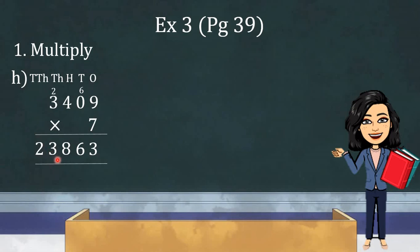So, the answer of your multiplication is 23,863. And, do you know what do we call the answer of multiplication? It is called product. So, we will say that the product of 3,409 and 7 is 23,863.